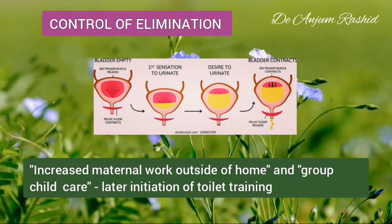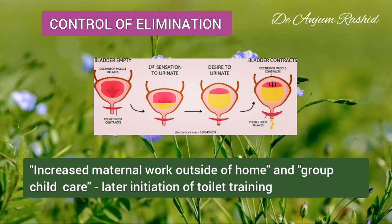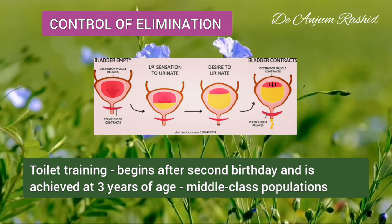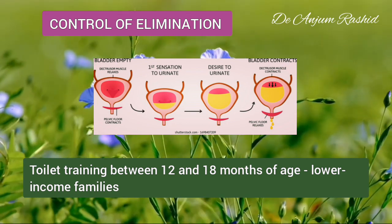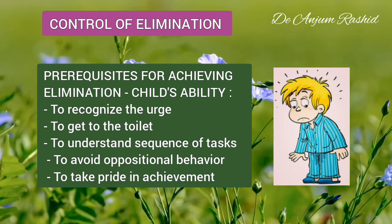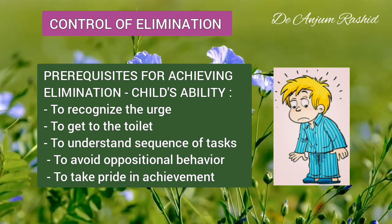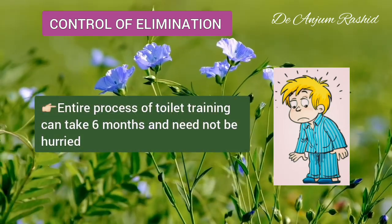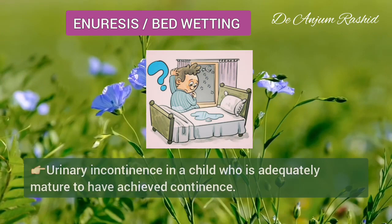Social changes including increased maternal work outside of the home and group child care have also influenced the trend toward later initiation of toilet training. Toilet training now usually begins after the second birthday and is achieved at about three years of age in middle-class populations. However, toilet training between 12 and 18 months of age continues to be accepted in lower-income families. Prerequisites for achieving elimination in the toilet include the child's ability to recognize the urge for urination and defecation, get to the toilet, understand the sequence of tasks, avoid oppositional behavior, and take pride in the achievement. The entire process can take six months.